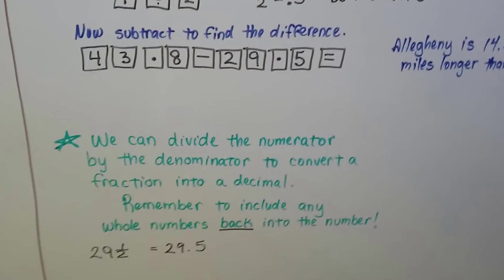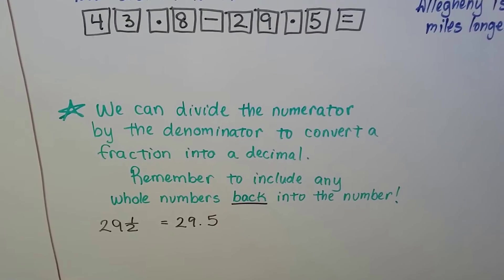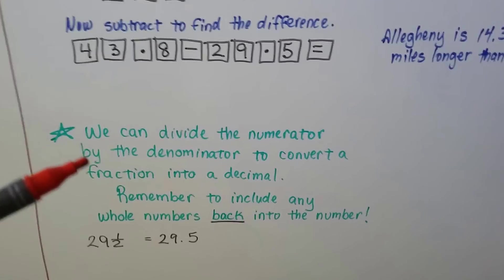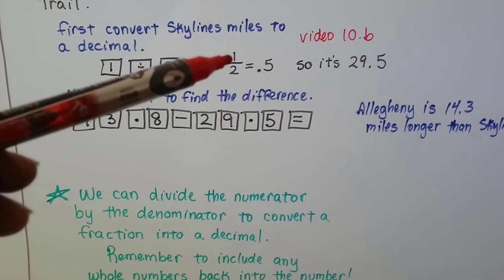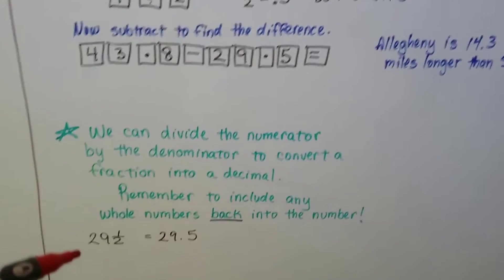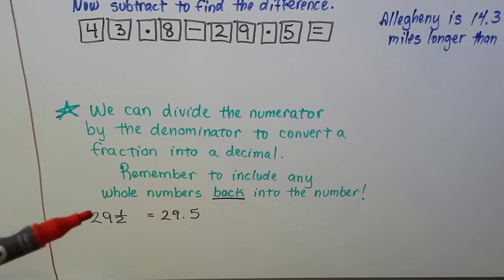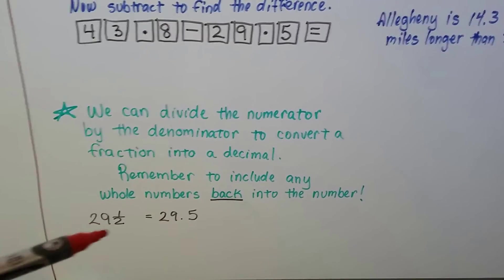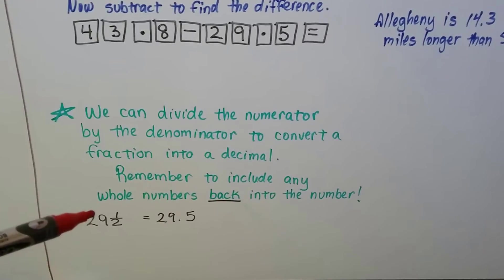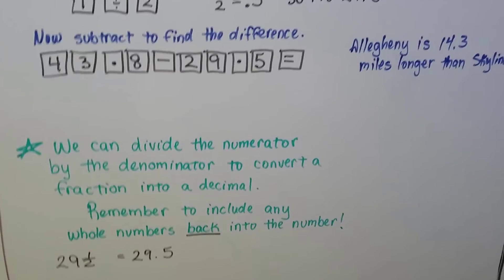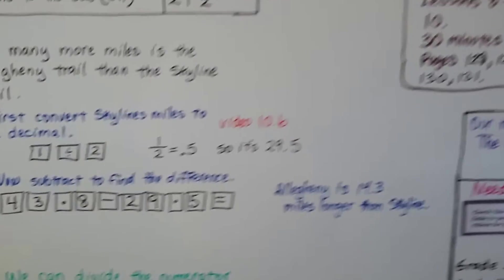You're going to have to use charts like that on the test. So, remember, we can divide the numerator by the denominator to convert a fraction into a decimal. Just divide the numerator by the denominator, 1 divided by 2. But remember to include any whole numbers back into the number because we don't use them when we're converting to a decimal. They just sit off to the side. You have to remember to put it back. They might trick you about that.